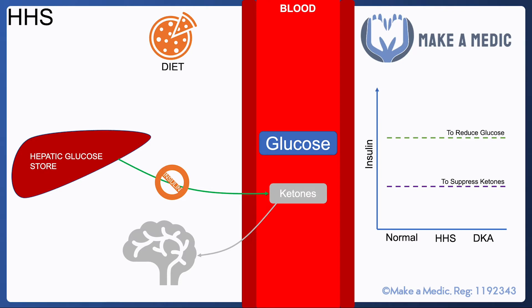In normal healthy individuals, insulin levels are sufficient to both suppress ketones and reduce glucose. In HHS, patients have enough insulin to suppress ketone production but not enough to overcome their insulin resistance, and hence not enough to reduce serum glucose concentration. In DKA, patients are insulin deficient and therefore don't have enough insulin to suppress glucose or ketones.